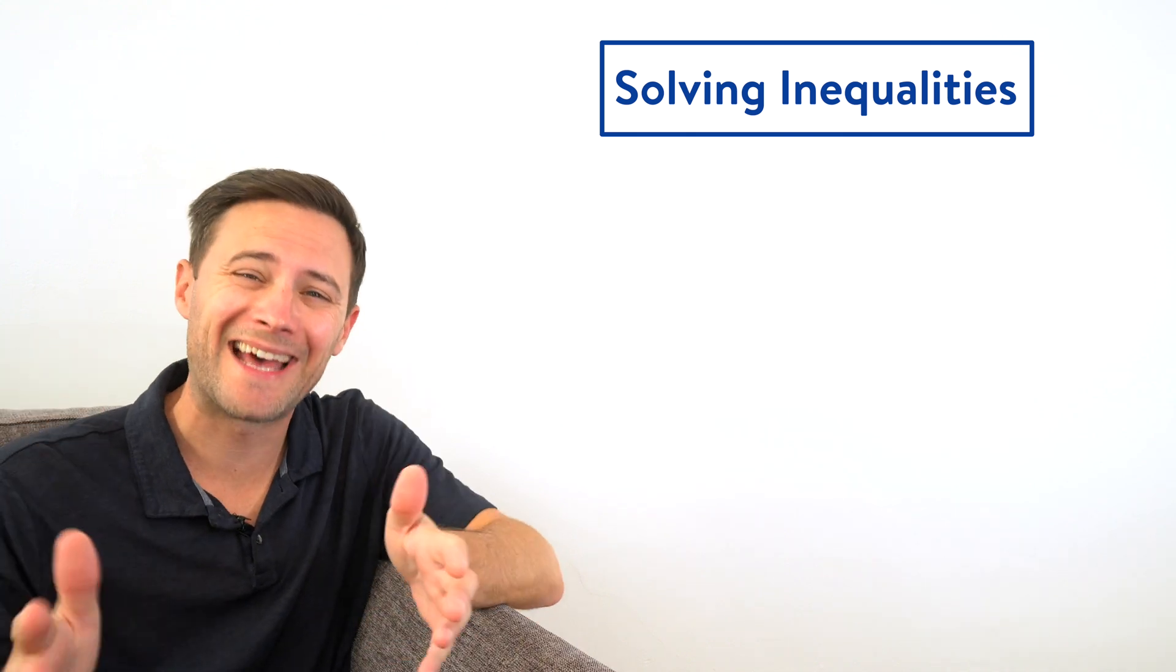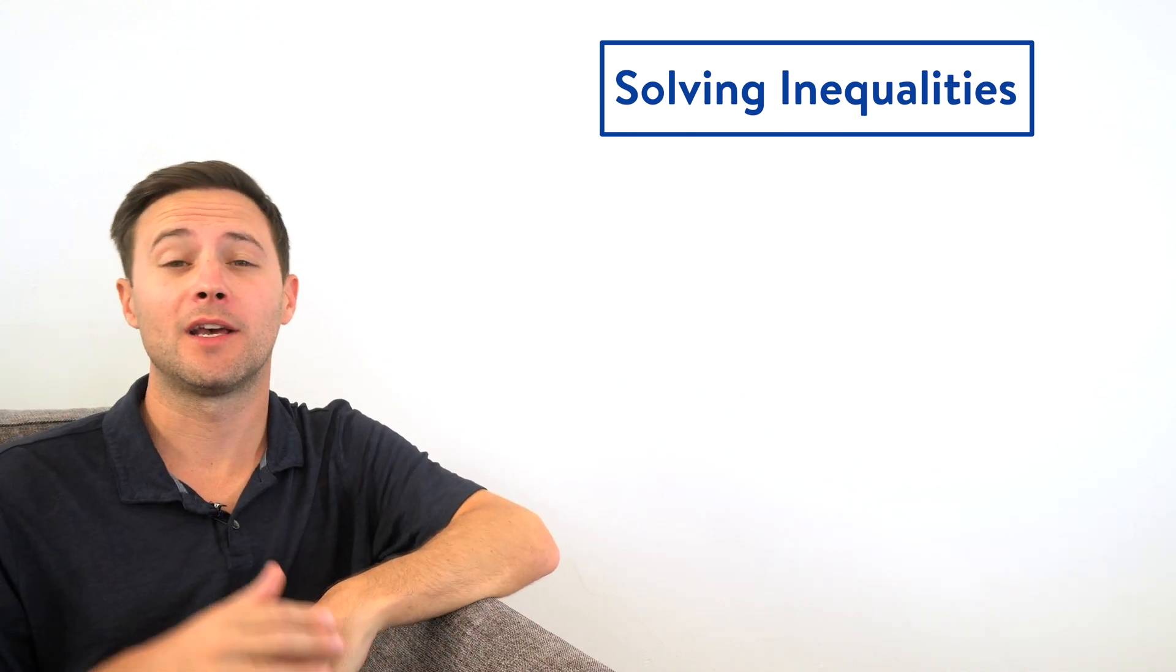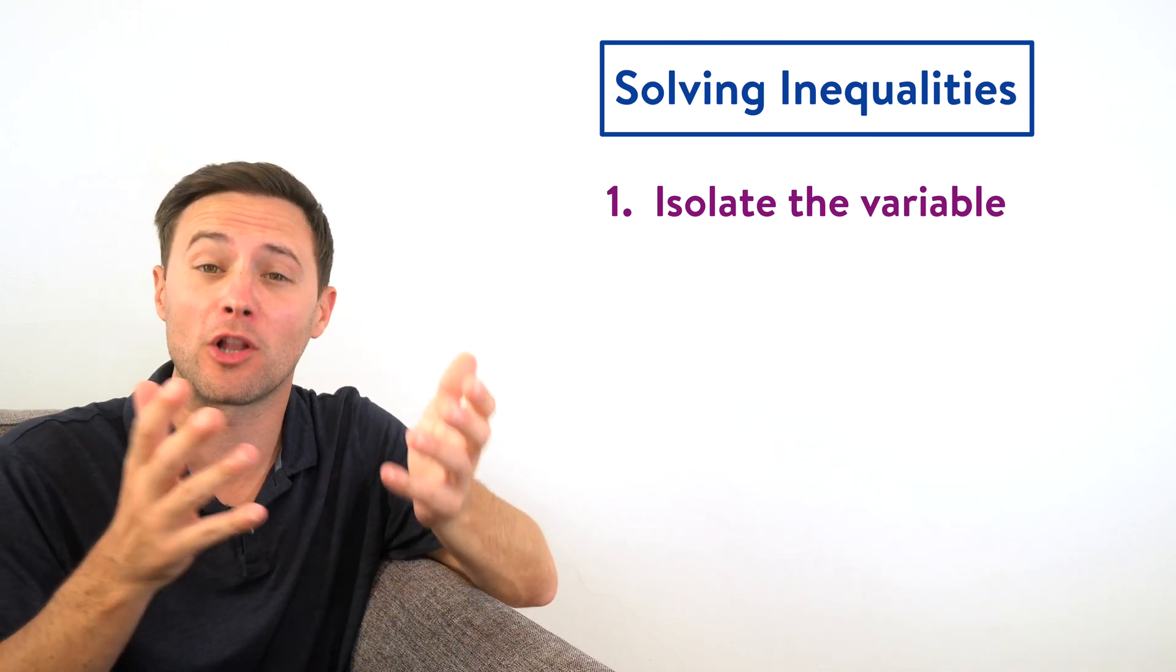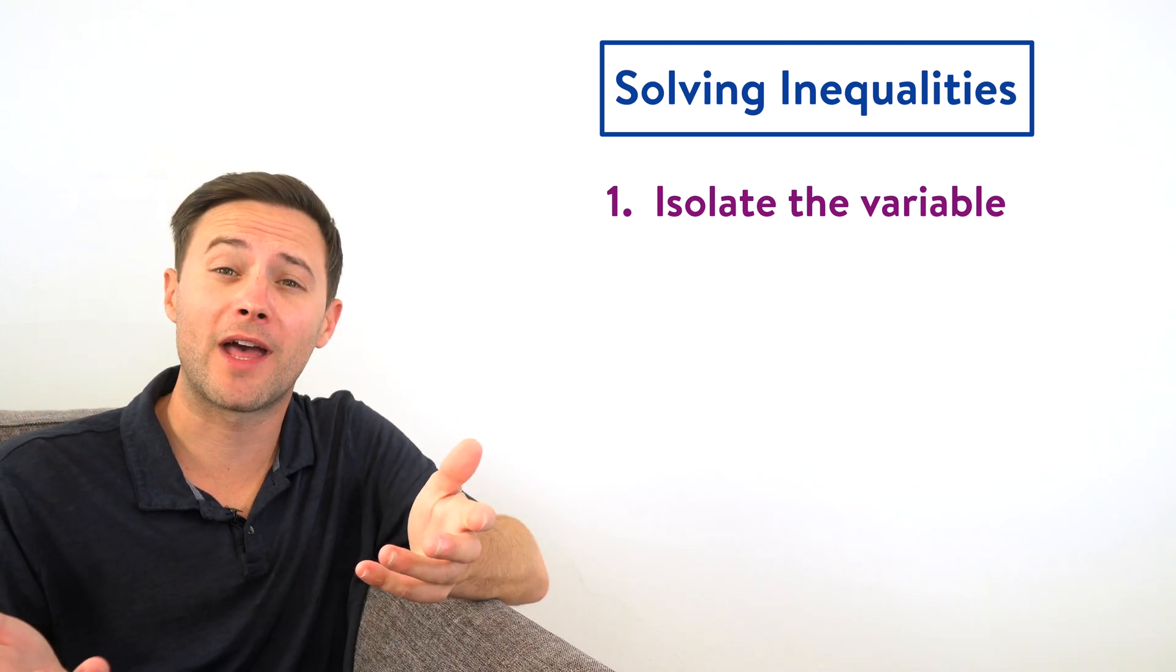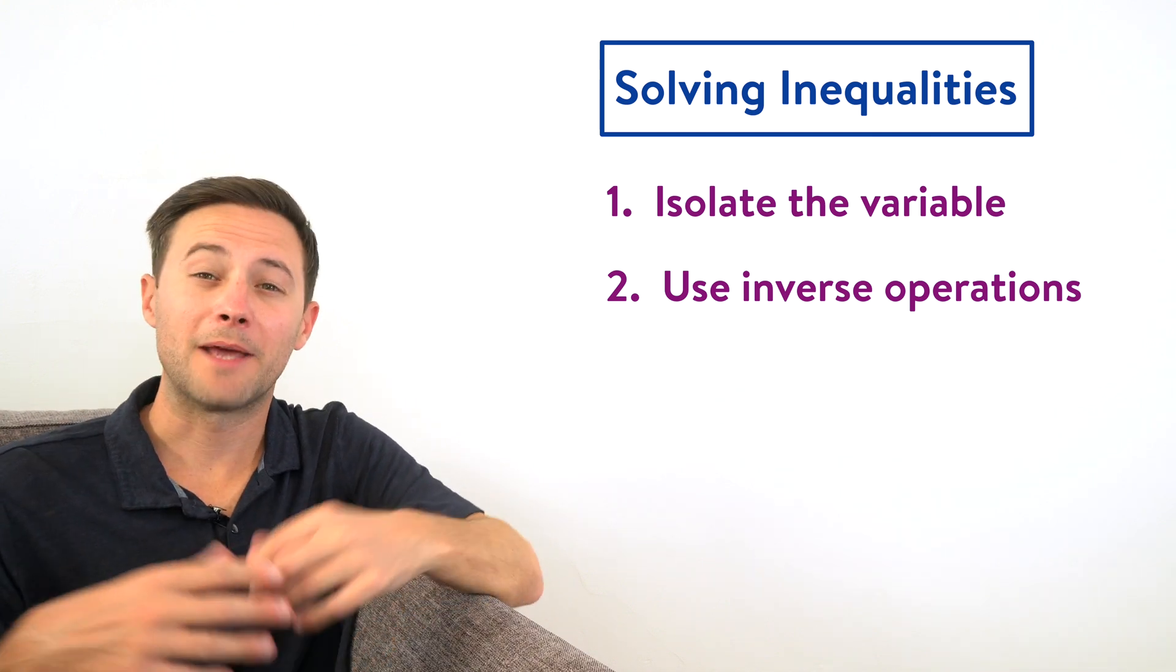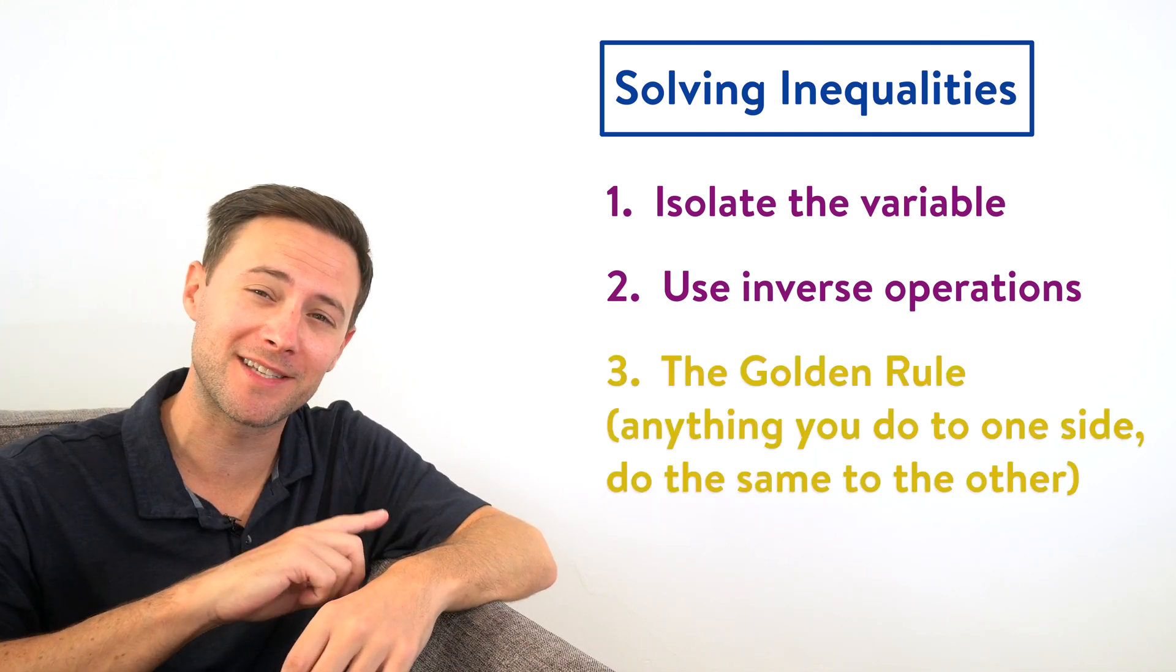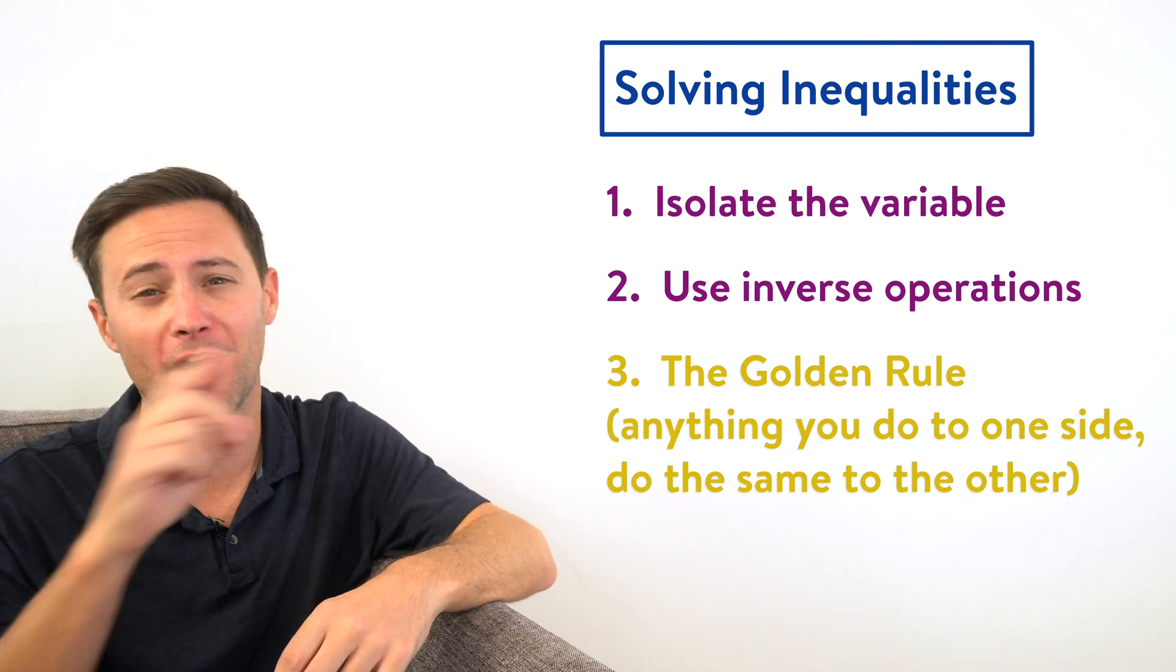Solving inequalities is almost identical to solving equations. We need to isolate the variable, which means just get the variable alone on one side. To do that we use inverse operations. And most importantly, that golden rule still applies: anything you do to one side, you've got to do the same to the other.